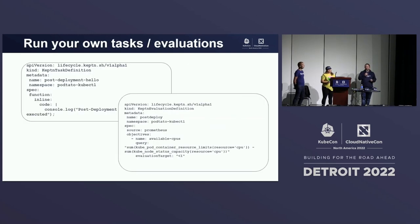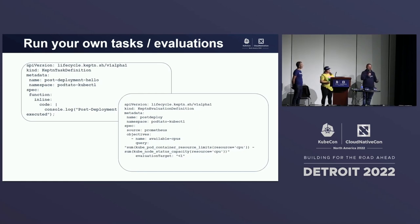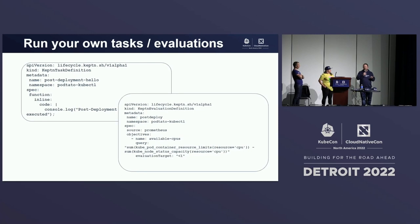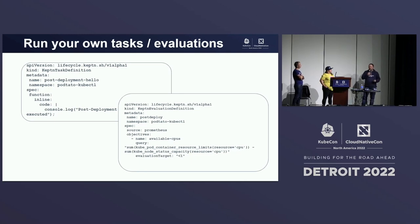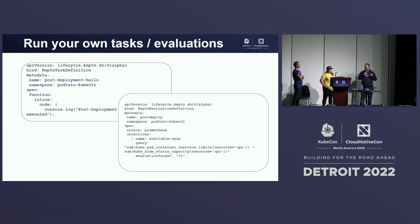As you might wonder how the task and evaluation configuration looks, we created two custom resource definitions. The first is a KeptnTaskDefinition where you can define your task — you can add your code inline in the CRD, host it on an HTTP server, or store it in a ConfigMap. The second is a KeptnEvaluationDefinition, which is used to check metrics against thresholds to find out if your application is running properly. Note this configuration may change a bit as the project evolves.